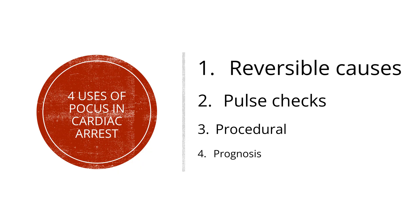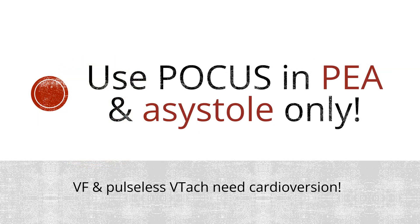We won't discuss procedural guidance much in this lecture, but it includes central lines, arterial lines, and pericardiocentesis. I need to mention that POCUS should only be used in cardiac arrest for the subset of PEA and asystole. If you have ventricular fibrillation or pulseless V-tach, these patients need cardioversion.